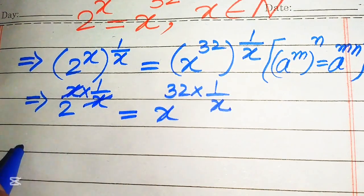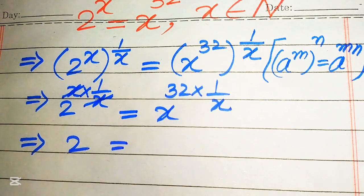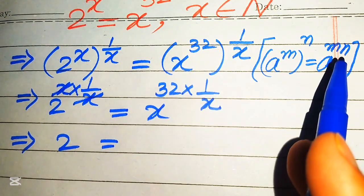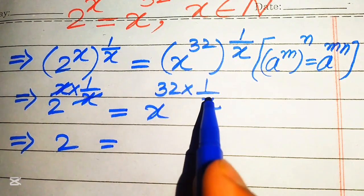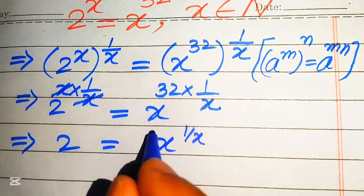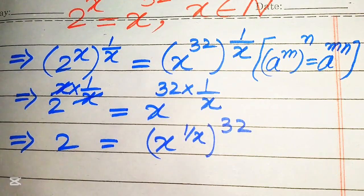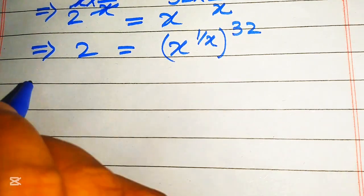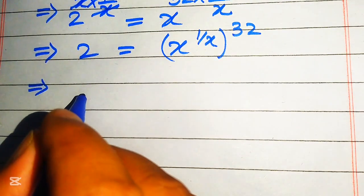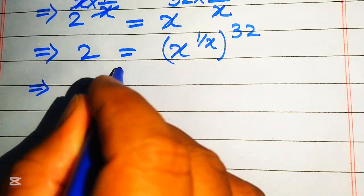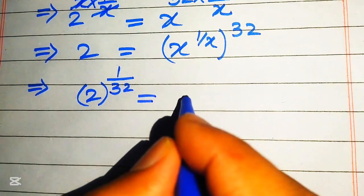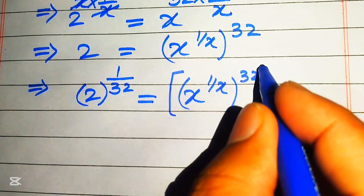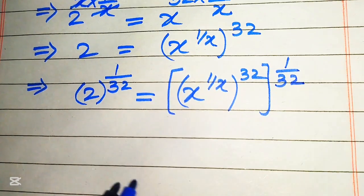The x and x in the exponent cancel on the left, giving us 2. On the right, we move 1 over x inside the term to get x to the power of 1 over x, whole raised to 32. Then we take the 32nd root on both sides, so 2 to the power of 1 over 32 equals x to the power of 1 over x, whole raised to 1 over 32.